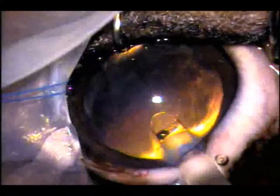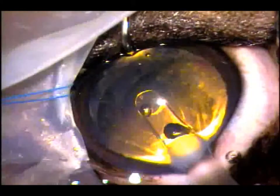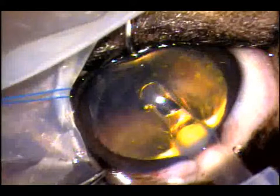After implanting the capsular tension ring device, we can go ahead and implant an intraocular lens. This is an injectable or foldable acrylic lens.